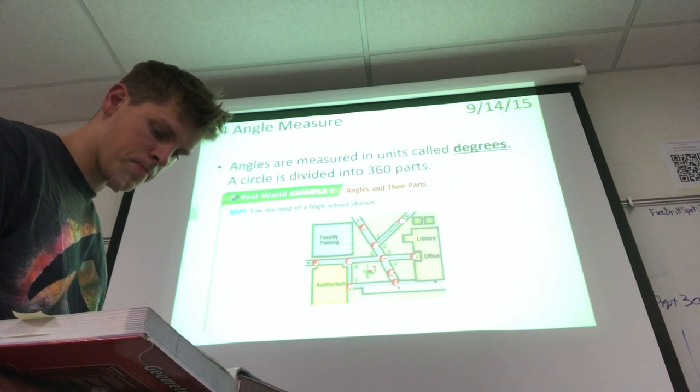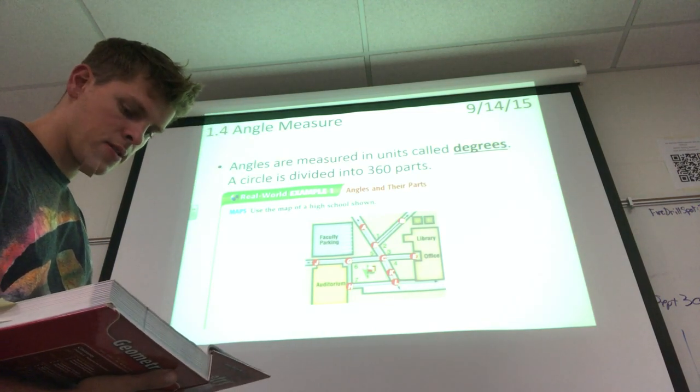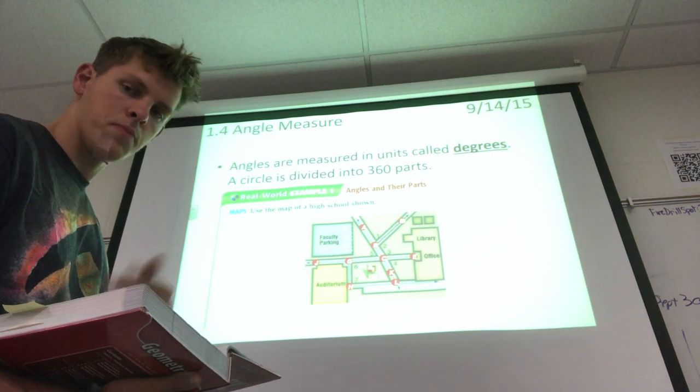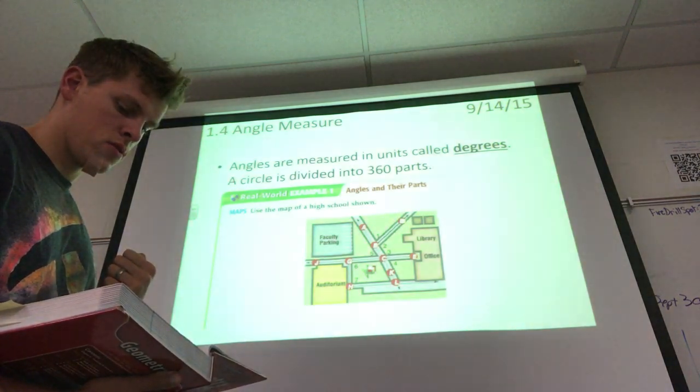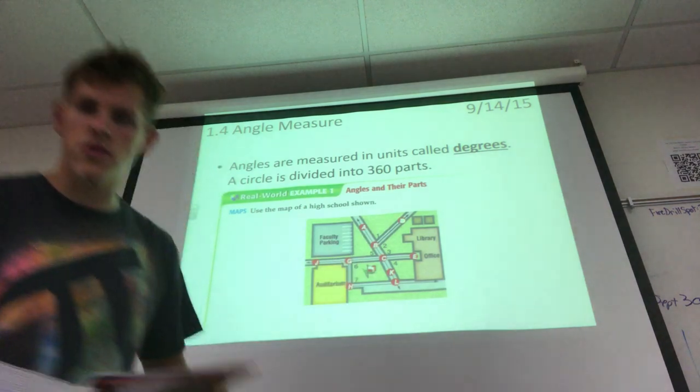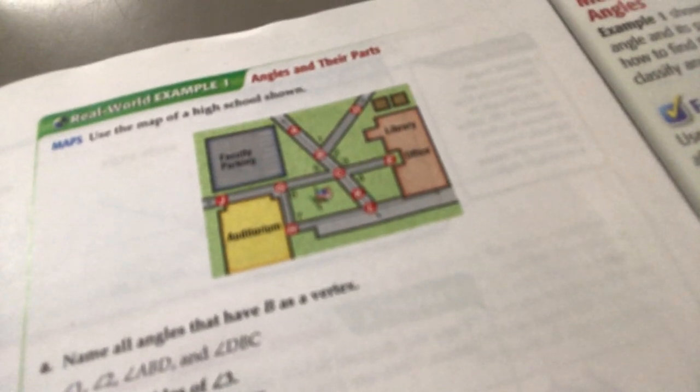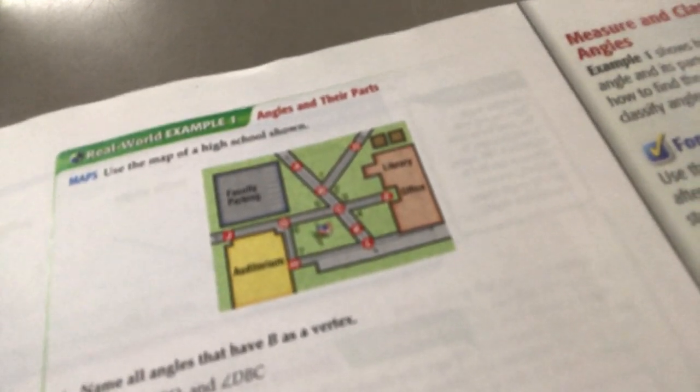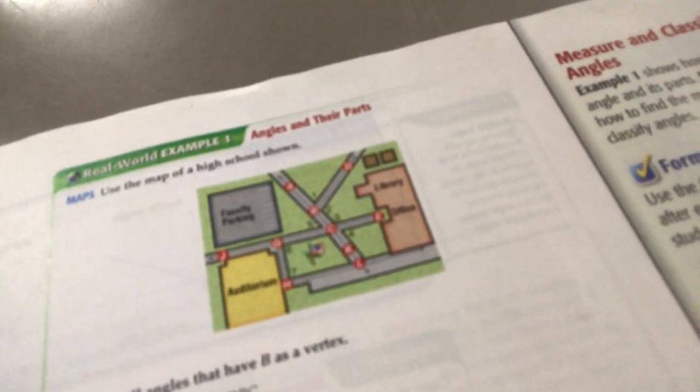Name all angles that have B as a vertex. All angles that have B as a vertex, we can see ABD has B as a vertex, DBC has B as a vertex, and we can even say 1 and 2 have B as a vertex. We can see the answers here right.